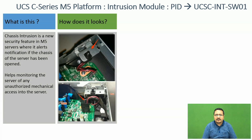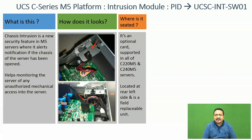How does it look? It is a black color switch mounted on the chassis. There are black and red wires which are used to connect it to the motherboard. It is an optional card supported in all C220 M5 and C240 M5 servers, located at the rear left side and is a field replaceable unit.